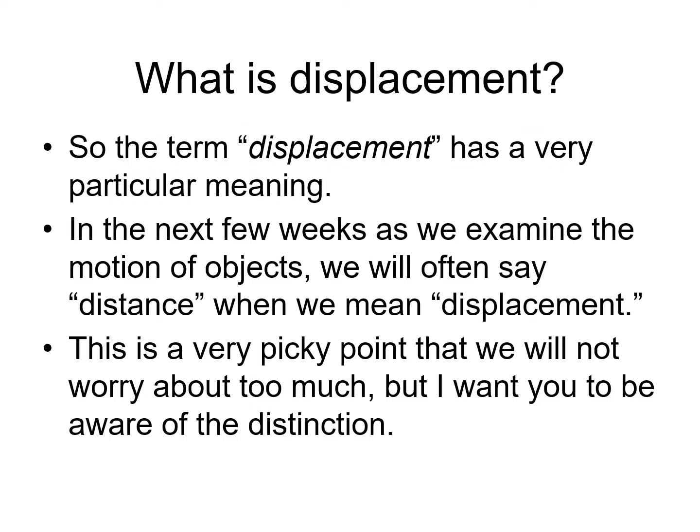So the term displacement has a very particular meaning. And in the next few weeks, as we examine the motion of objects, quite often I will be referring to displacement. But sometimes I will slip up and I will say distance. It's a very picky point. And we're not going to worry about it too much. But I want you to be aware of this fine distinction. Displacement is a straight line from the start to finish that includes a direction. Distance, on the other hand, can include all sorts of motions. And you don't necessarily have to specify a direction.